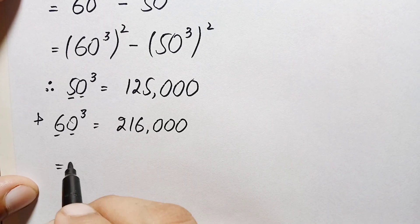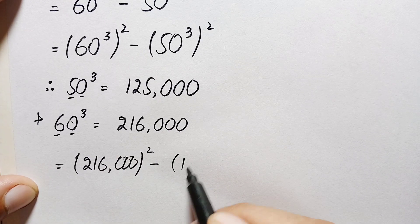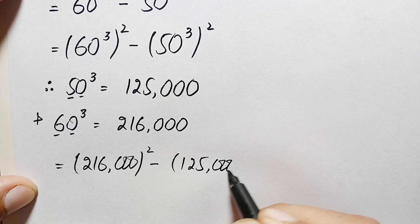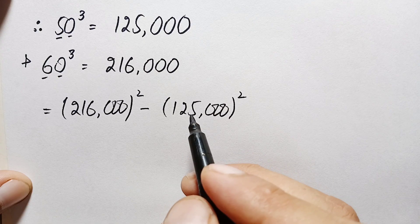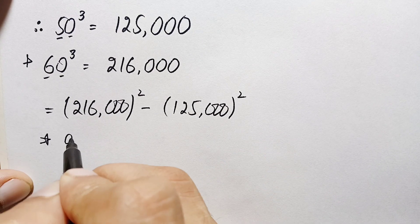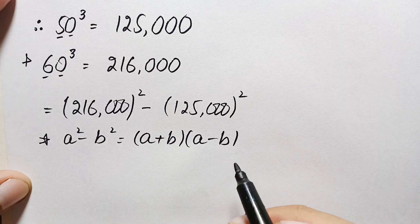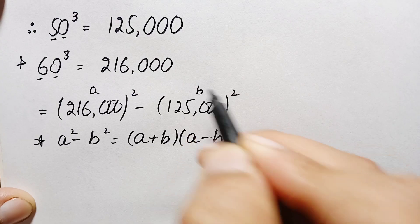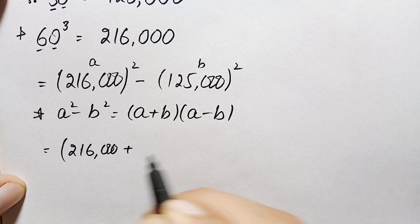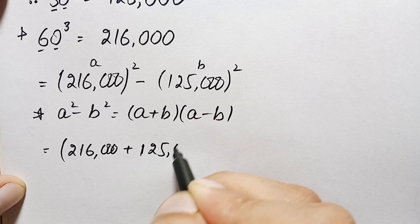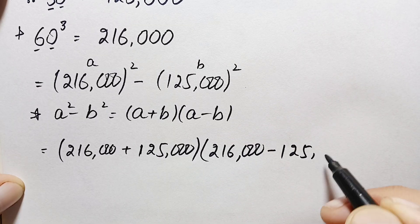Now we substitute these two values. This becomes 216,000 whole squared minus 125,000 whole squared. Looking at both numbers, they are both in square form, so we apply the algebraic identity a squared minus b squared, which equals a plus b times a minus b. Here our a is 216,000 and our b is 125,000, so this becomes 216,000 plus 125,000 times 216,000 minus 125,000.